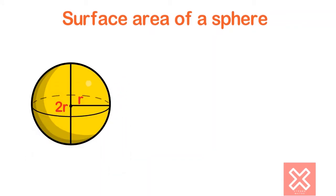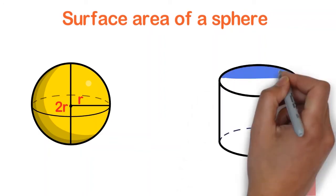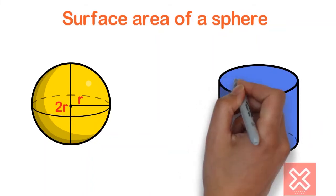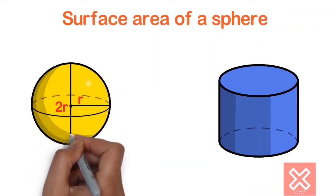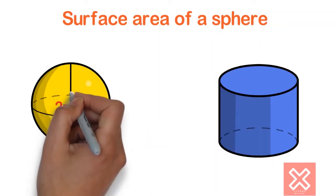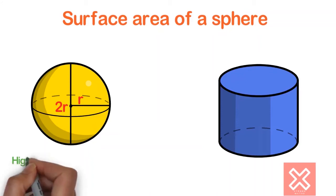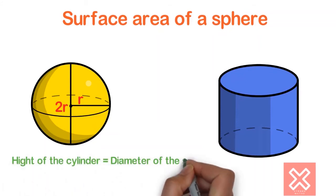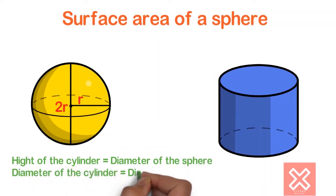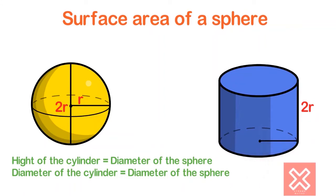The diameter of the sphere is 2R. Now we take a cylinder where the diameter is the same as the sphere's diameter, and the height also equals the diameter of the sphere — so height equals 2R and the radius equals R.